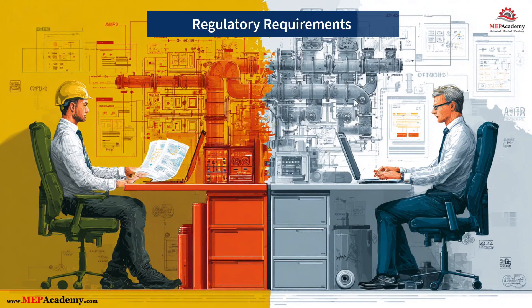The submission process for regulatory approval differs for process and comfort cooling systems. Process cooling regulatory submissions typically include: environmental impact assessments for industrial cooling projects; OSHA compliance reports for workplace safety; specialized permits for hazardous materials such as refrigerants and chemical processing; and detailed power consumption reports required by utility companies.